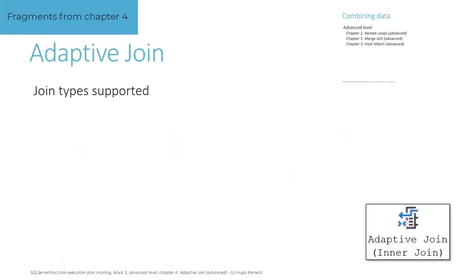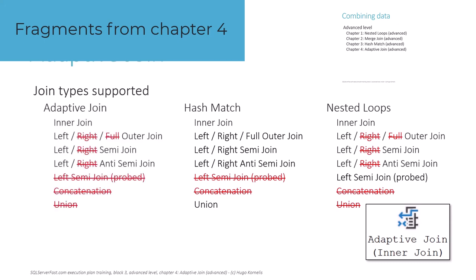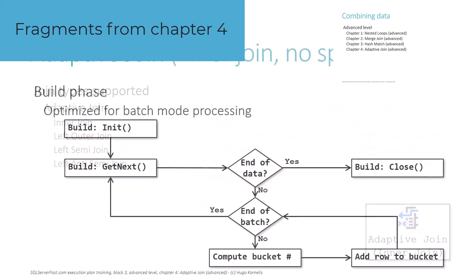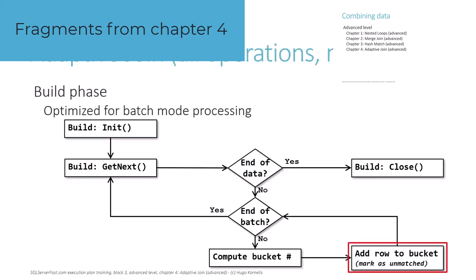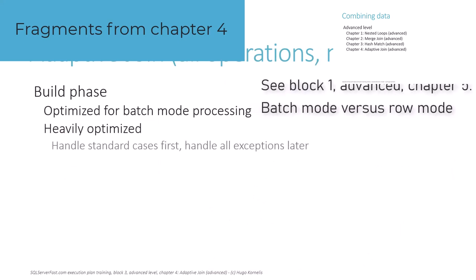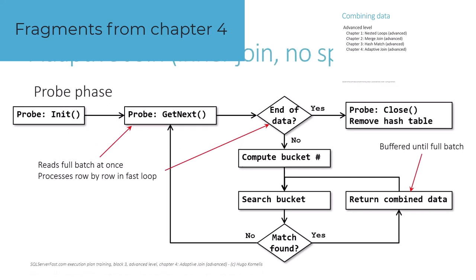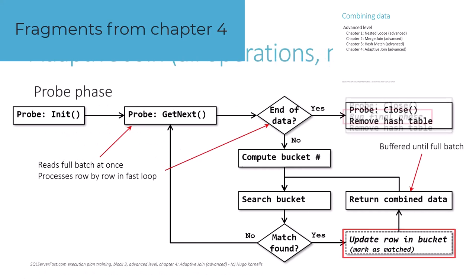The fourth and last chapter covers advanced topics for the adaptive join operator. Because this operator combines the hash match and nested loops algorithms that we already described in detail in the previous chapters, we now immediately jump to the combined flowcharts for all supported logical operations, because they are more or less the same as the flowcharts for the hash match and nested loops operators.